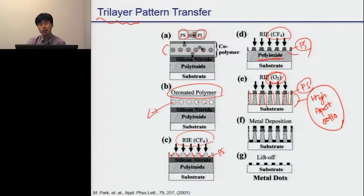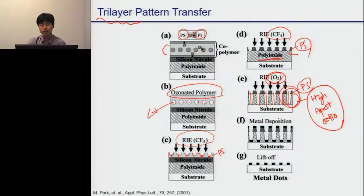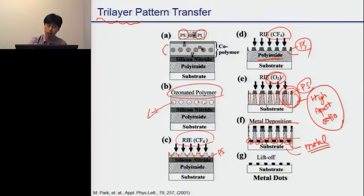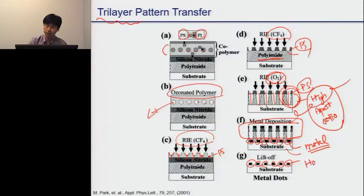Depending on what kind of materials you want to etch, you can use these structures directly as a mask. But depending on the material, you may want to use a hard mask. In this case, this paper deposited a metal layer, and then during the following liftoff process, removed all these structures. Finally, we achieve this kind of hard mask structure. If we do substrate etching using this kind of hard mask, we can also have pretty good etch selectivities.